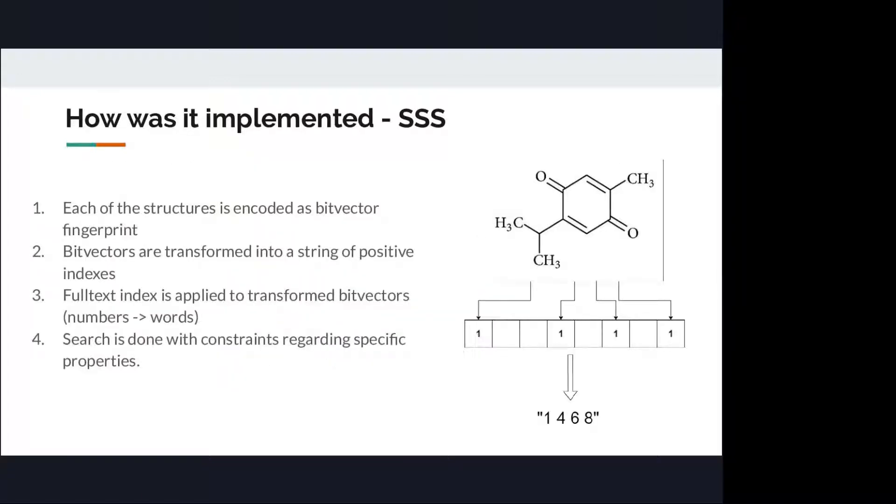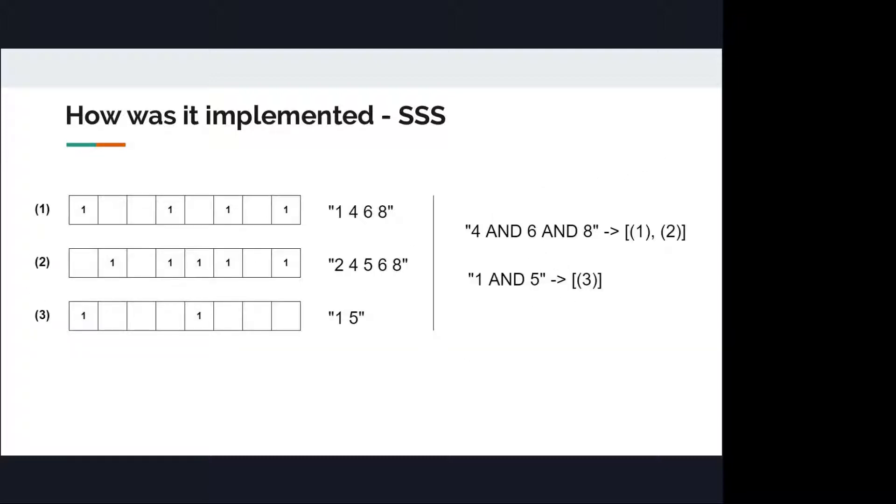How can we apply substructure search? How can we use it? In order to use it, we have to make some preprocessing. First of all, we transform our molecule into a bit vector. Later, positive indexes of positive bits are concatenated into a string. This string represents us a text for a full-text index.